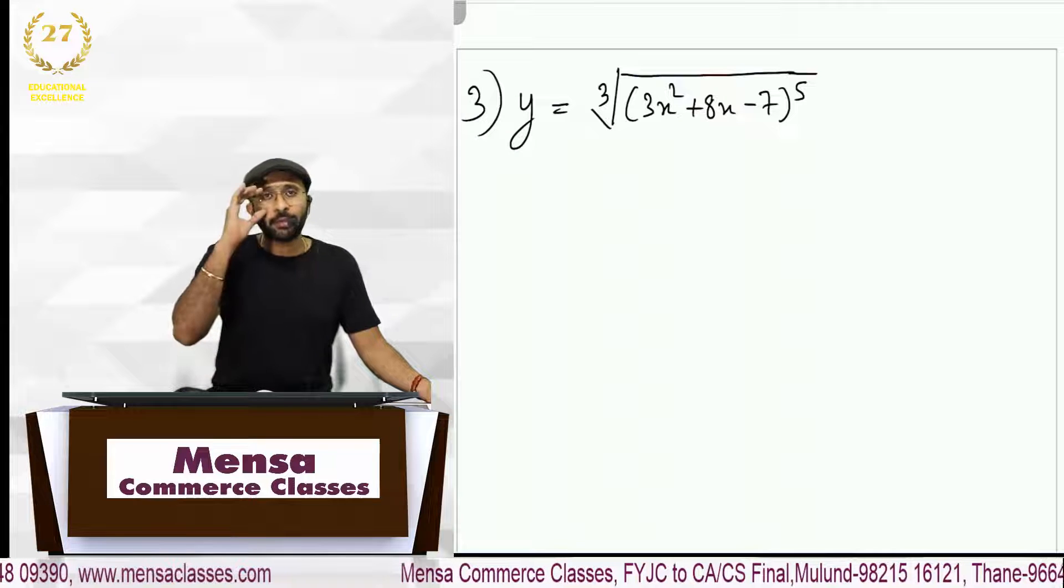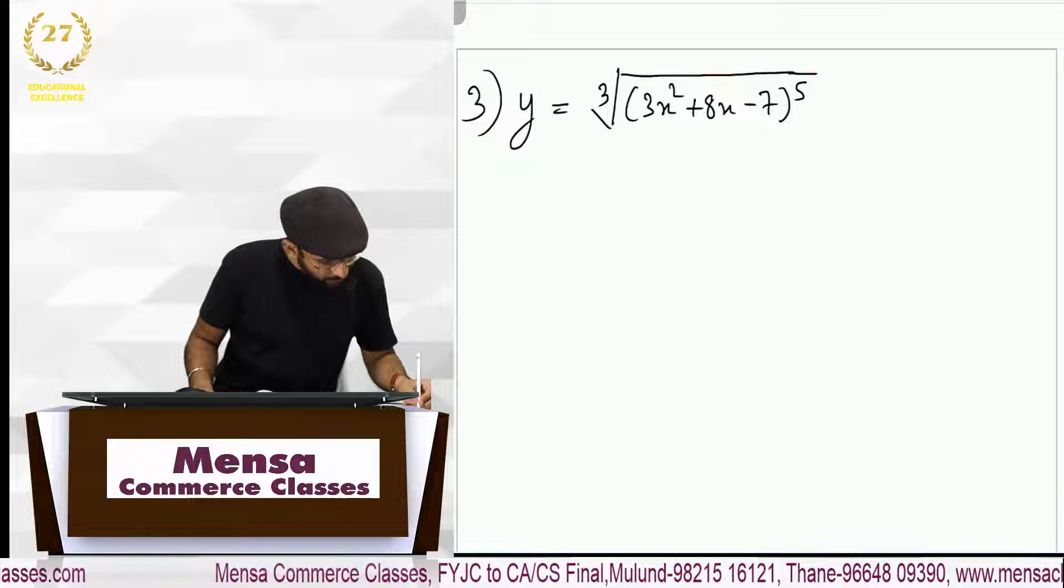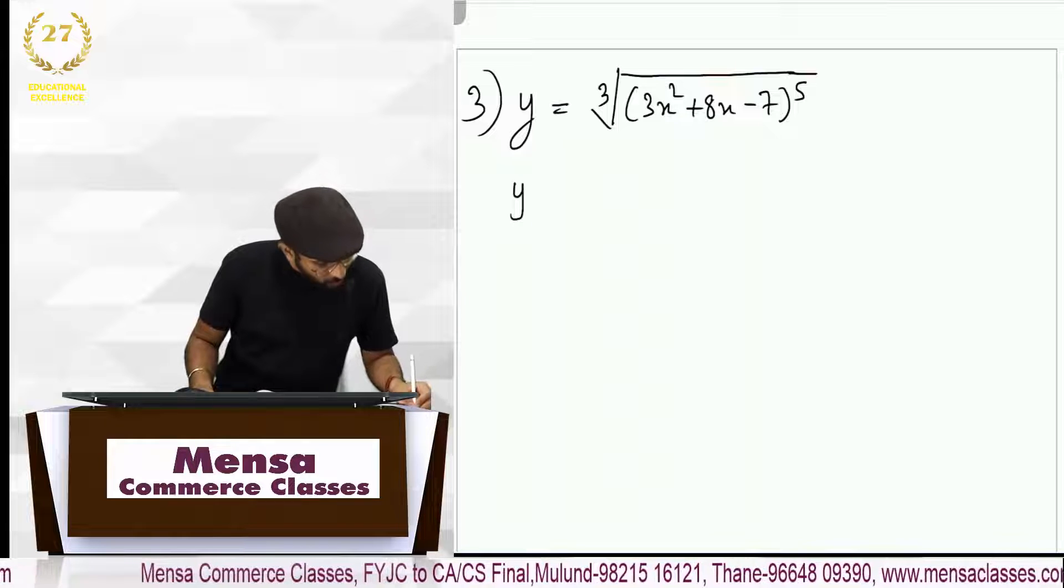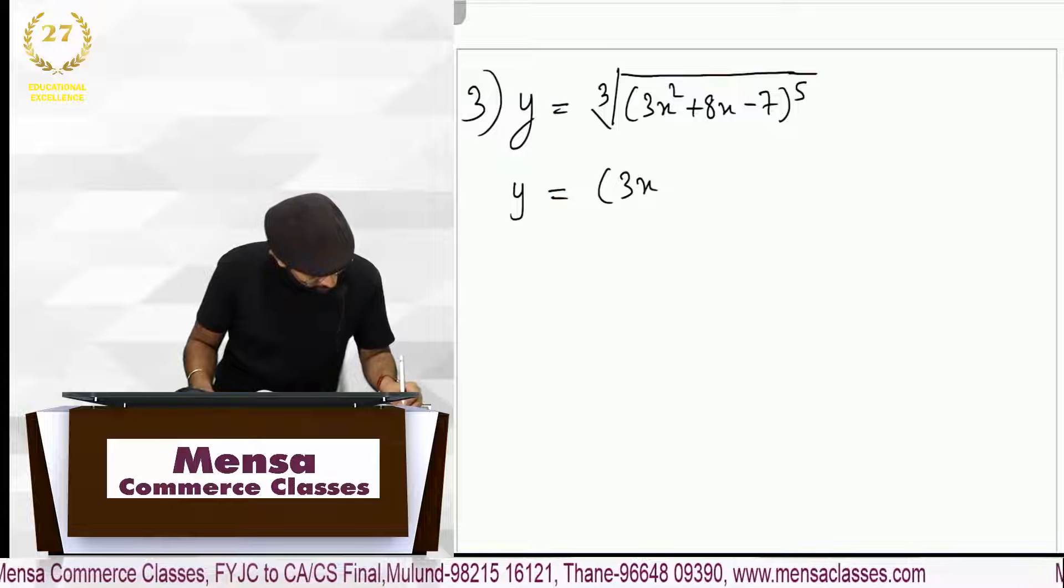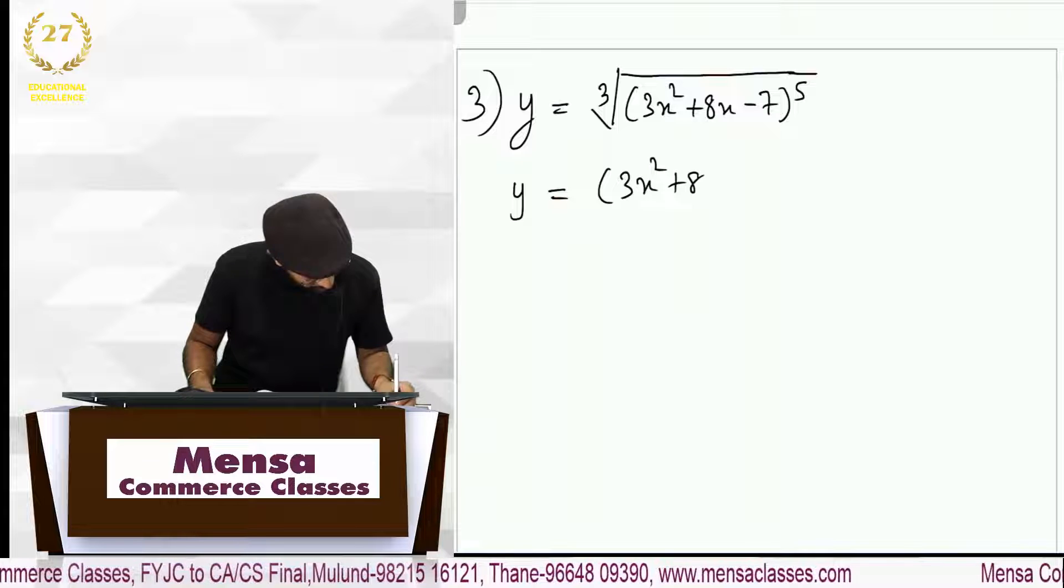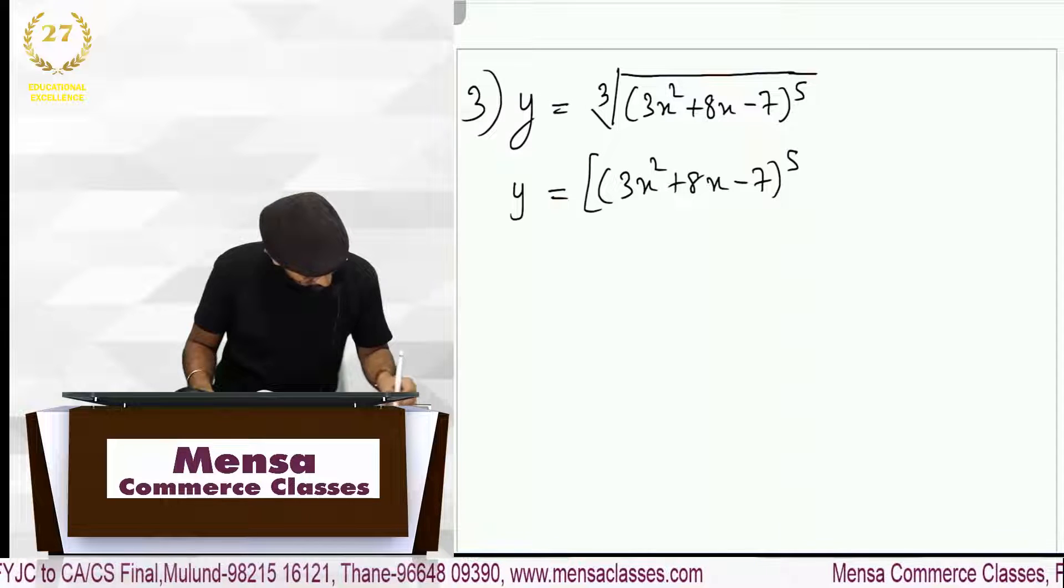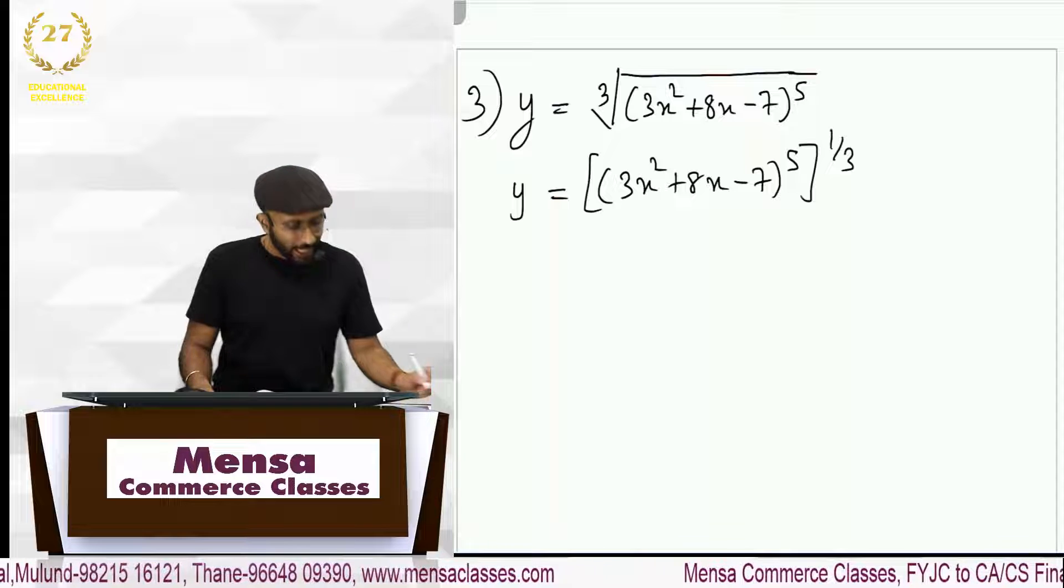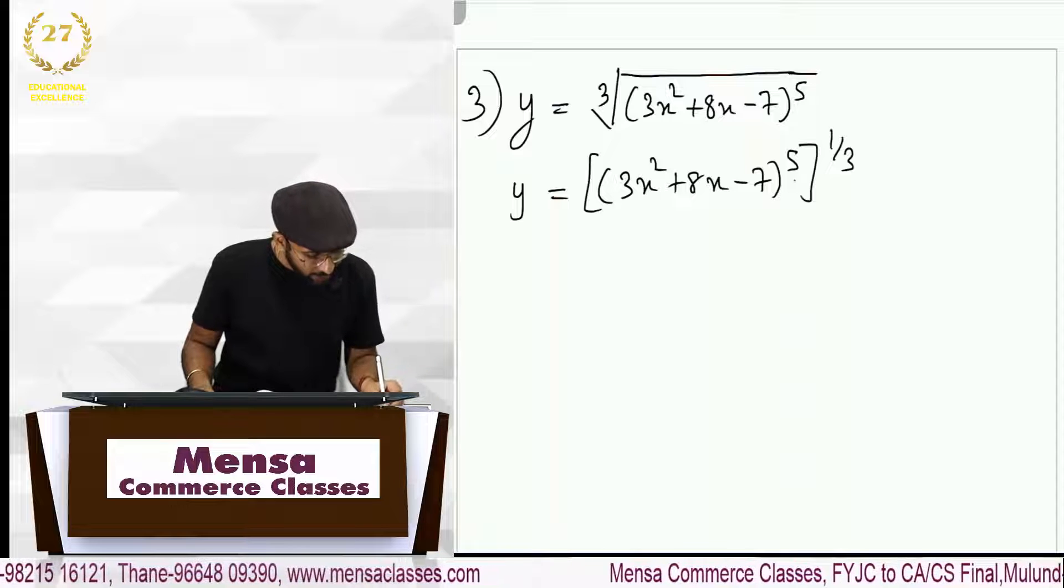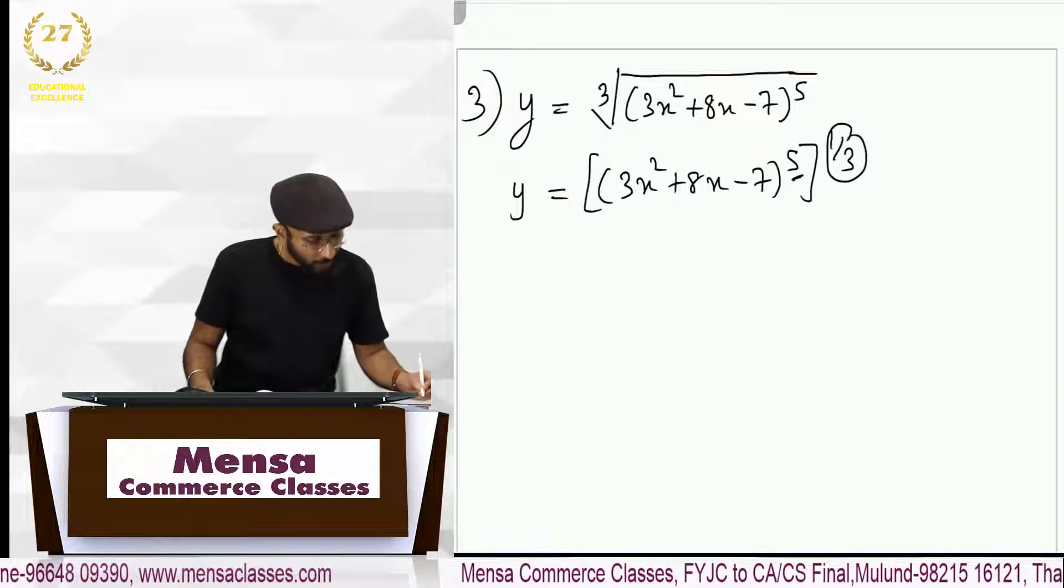तो पहले मैं क्या करेगा बता है मैंना ये question का presentation change करेगा. अभी वो जो cube root है उस cube root को हम लिख सकते है अंदर का term as it is. ठीक है raised to 5, जो cube root है that can be written as raised to 1 by 3 and then according to law of indices ये वाला power और ये वाला power multiply होगा.